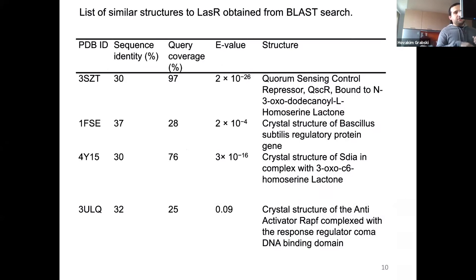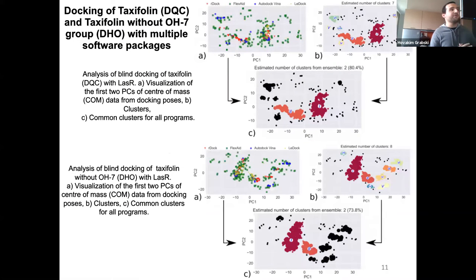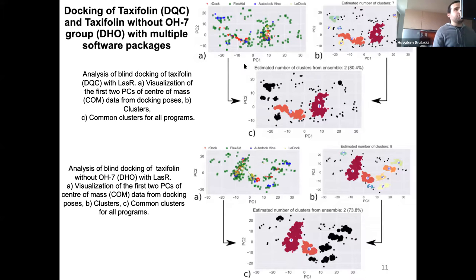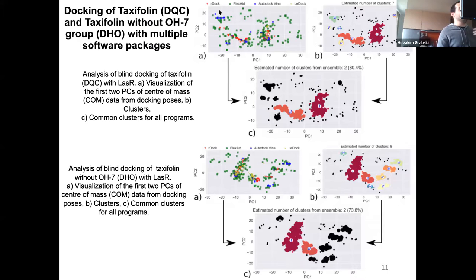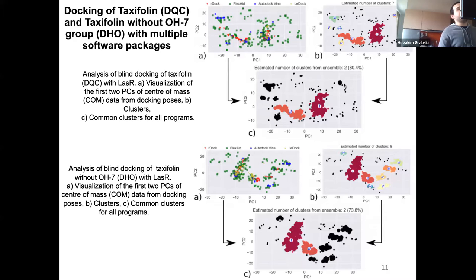After the construction, we moved to molecular docking. In this case, we performed ensemble docking, using multiple docking programs and machine learning techniques. We performed molecular docking with programs such as rDock, Glide, AutoDock, and Vina. We then clustered the data and found two binding sites.